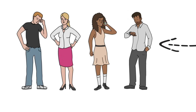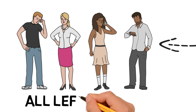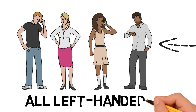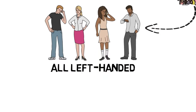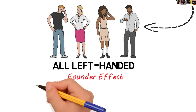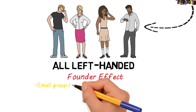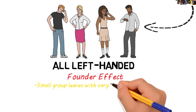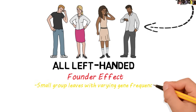Their gene pool is now drastically different from the group they left, because all their descendants will be left-handed. This is an example of the founder effect, when a small group leaves from a population and carries with it a new gene frequency.